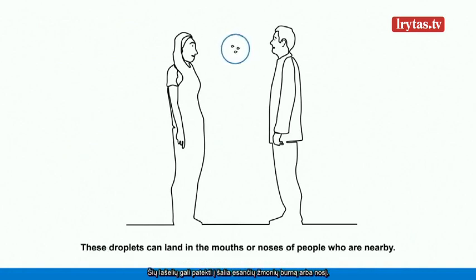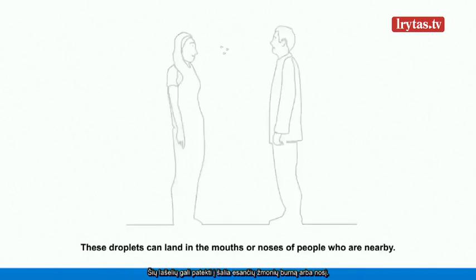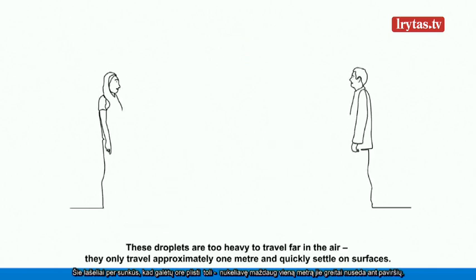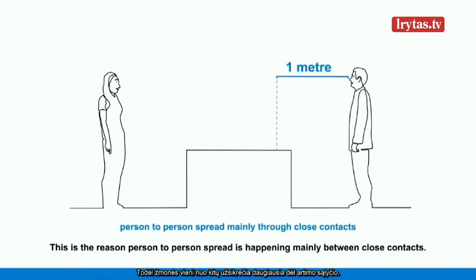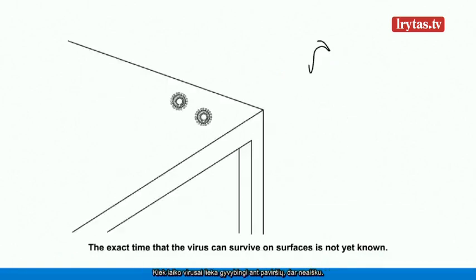These droplets can land in the mouths or noses of people who are nearby. These droplets are too heavy to travel far in the air. They only travel approximately one metre and quickly settle on surfaces. This is the reason person to person spread is happening mainly between close contacts.